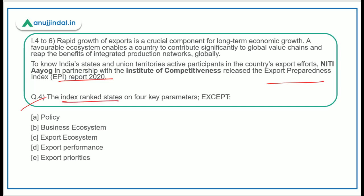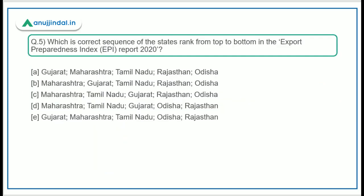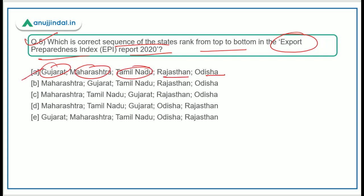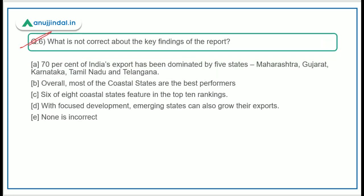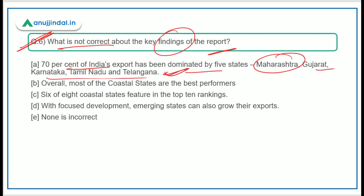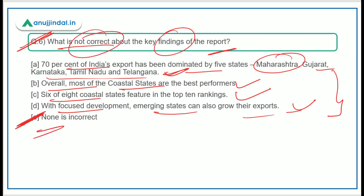Question 4: The index ranks states on four parameters except — it ranks on policy, business ecosystem, export ecosystem, and export performance, not on export priorities, so option E is the correct answer. Question 5: The correct sequence from top to bottom is Gujarat, Maharashtra, Tamil Nadu, Rajasthan, Odisha — option A is correct. Question 6: All the given statements are correct, so none is incorrect — the correct answer is 'none is incorrect.'